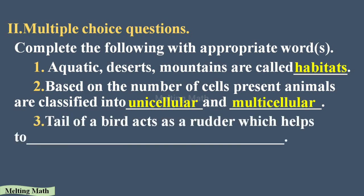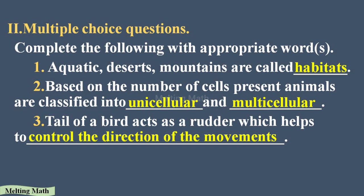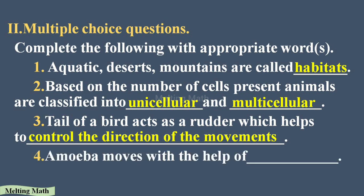Fill in the blanks question three: the tail of a bird acts as a rudder, which helps the bird to control the direction of movement when flying. Question four: amoeba moves with the help of pseudopodia — that is, false feet, as we already discussed.